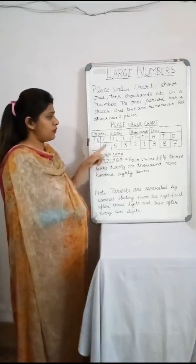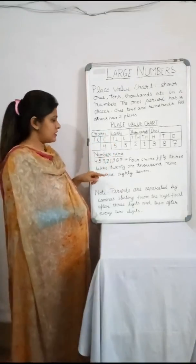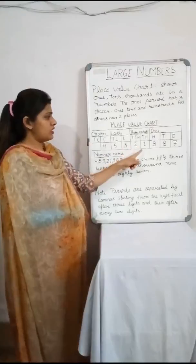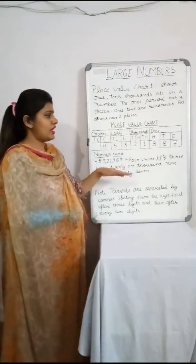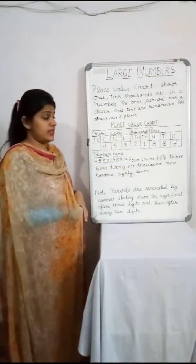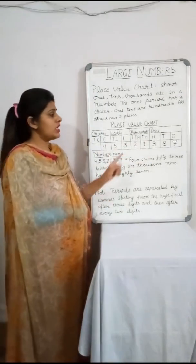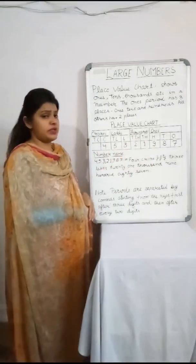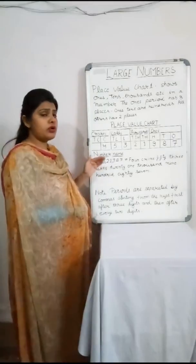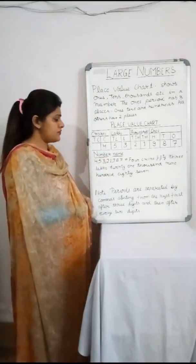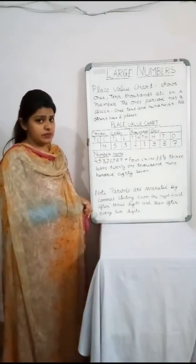Then, five and three fall in the lakhs place — we write fifty-three lakhs. Two and one fall in the thousands place — we write twenty-one thousand. And nine, eight, seven fall in the ones place — we write nine hundred eighty-seven. So the number name is four crores, fifty-three lakhs, twenty-one thousand, nine hundred eighty-seven.